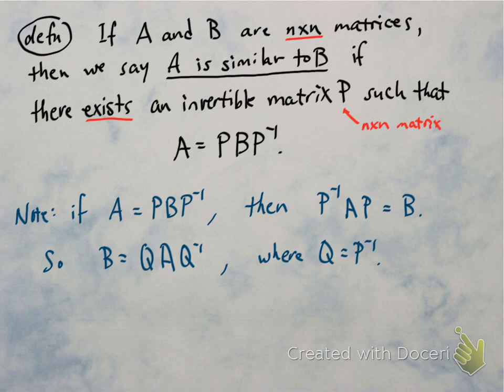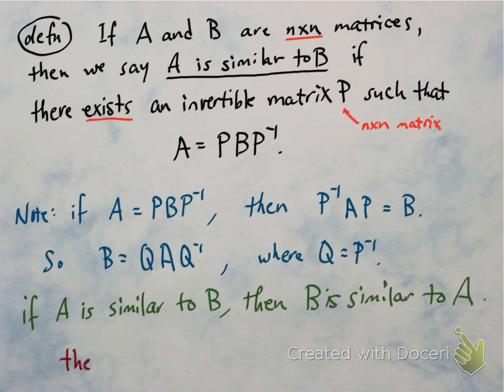In other words, if A is similar to B, then B is similar to A. So the similarity property is symmetric.